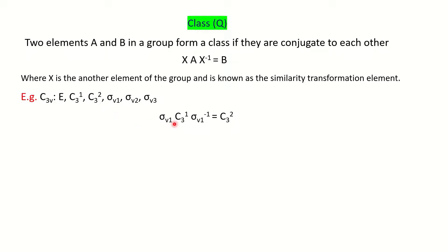Now, to find out whether C3¹ and C3² form the same class — can we write it as 2C3 — or whether the three σV operations form a class and can be written as 3σV, we will perform the similarity transformation.